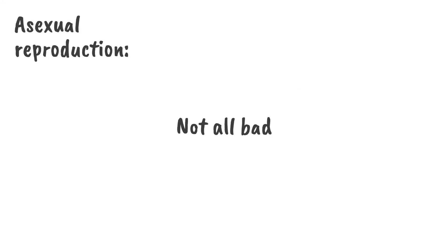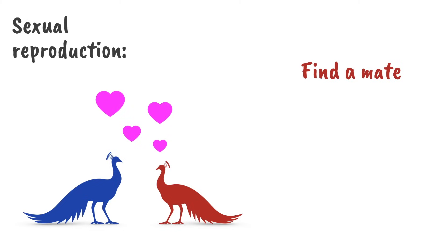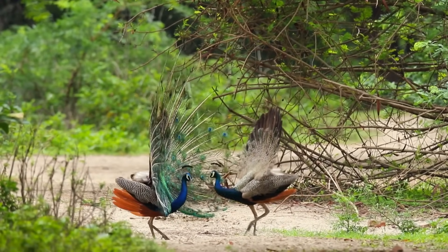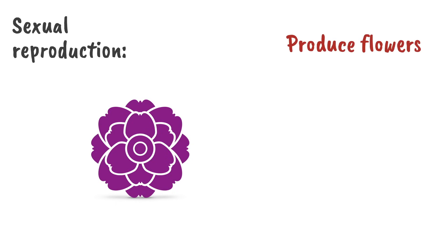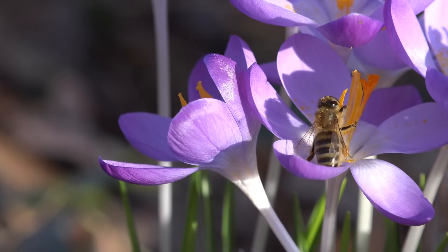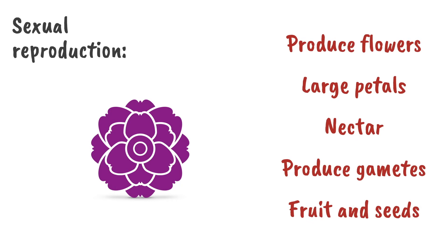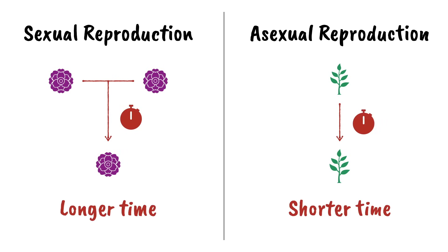But asexual reproduction is not all bad. Firstly, for sexual reproduction to happen, individuals need to find a mate. Male and female animals must find each other and mate, and sometimes complicated mating rituals are involved. In addition, gametes must be produced for fertilization to take place. In the case of flowering plants, the plants must produce flowers, sometimes with large colorful petals and nectar to attract insects. Gametes must also be produced, and don't forget fruit and seed development — all of this takes time and energy. In general, the time taken to produce mature offspring via asexual reproduction is much shorter than when using sexual reproduction, so asexual reproduction is a better way of colonizing an area quickly, assuming conditions are right.